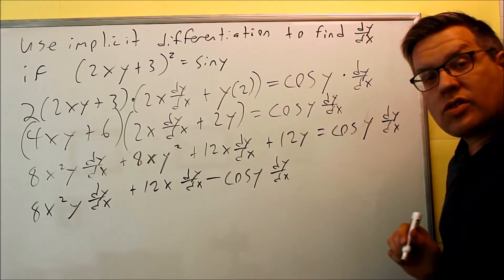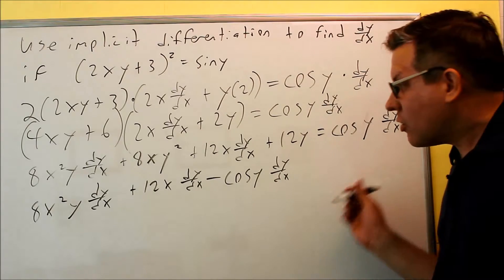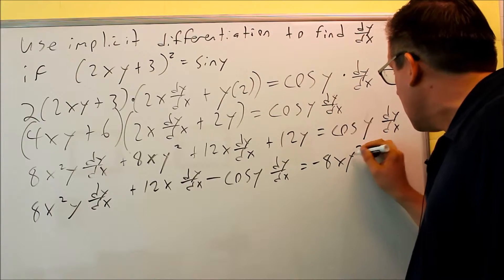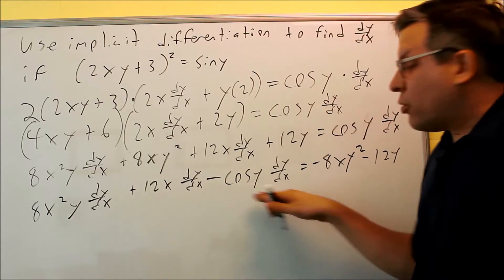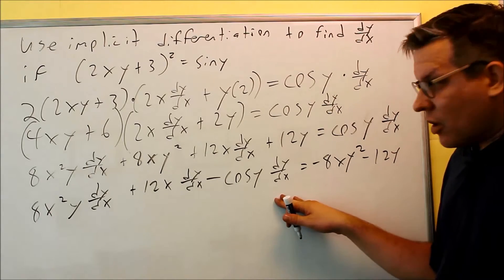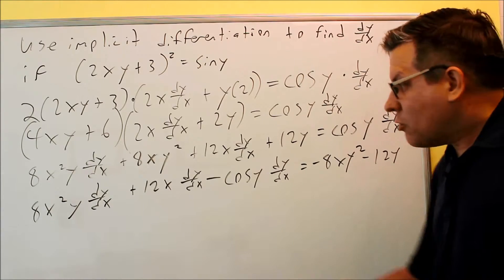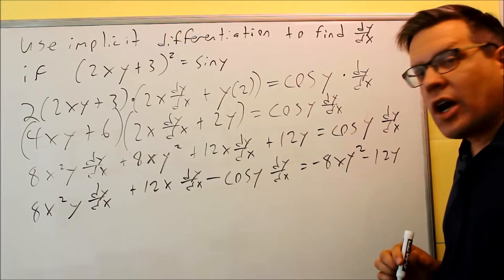What happens to the other ones? Those are going to go across the equal signs. Anything that does not have dy/dx, we write that on the other side of the equation. So I'm going to subtract the 8xy², and I'm also going to subtract the 12y. We purposely put all these on one side of the equation because you always do this same technique. You'll be seeing this happen on several problems in this section.